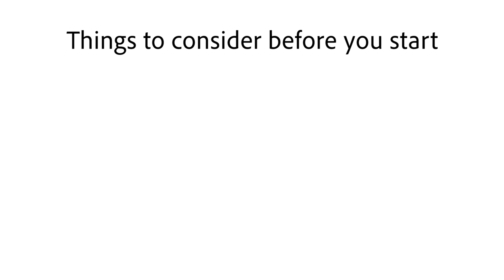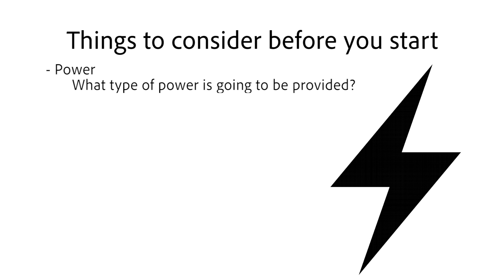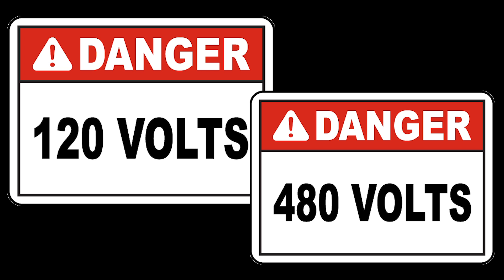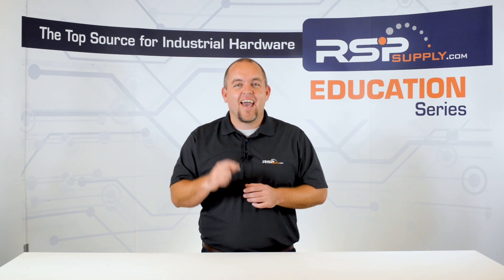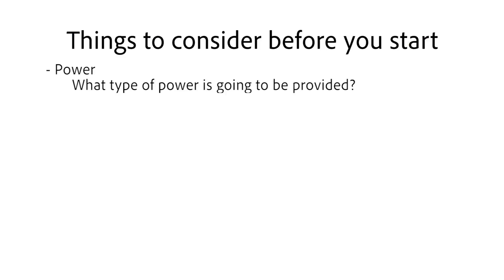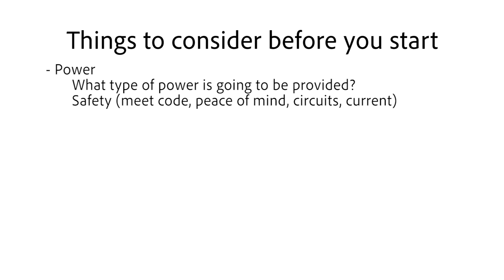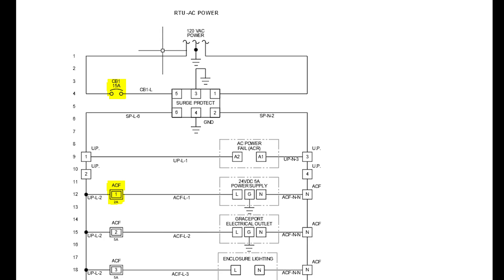There is a lot of information that needs to be gathered and understood before starting the design of an electrical layout. One of the first things that should be considered when designing an electrical schematic is power. What type of power is going to be provided? Is it 120 volts? Is it 480 volts? Or is it something different? It is very important to have this information because it will greatly impact the design and hardware that will be used to generate the drawing. In regards to power, it is critical to think about safety in your design and what type of protection needs to be provided to not only meet code but to ensure that anyone who might come in close proximity to the electrical system will be safe and confident in knowing that it has been designed properly. It is important to think about all of the different circuits in the design and to think about what type of protection is needed for each one.